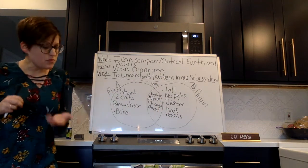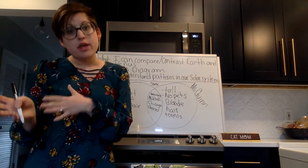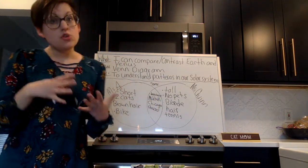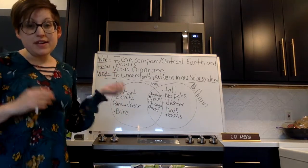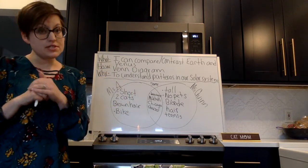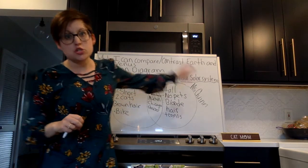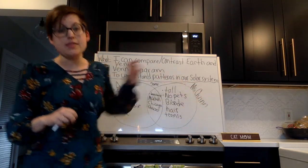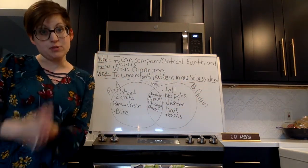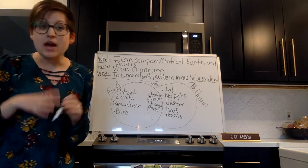So when we think about Earth and Venus, you are going to do a Venn diagram on your Seesaw app where I'm going to hopefully see two things about Earth, two things about Venus that are unique, and then at least two things that are similar between the two planets. Now to help you out on your Seesaw app, I do have a reading passage that compares and contrasts the two planets.